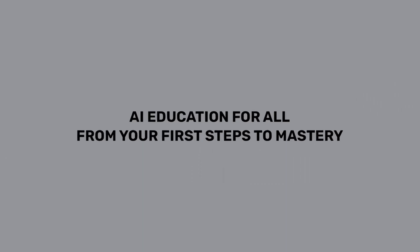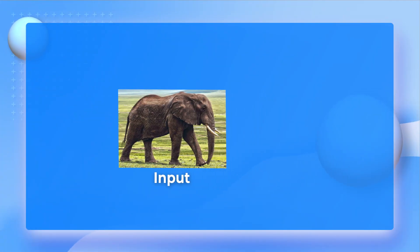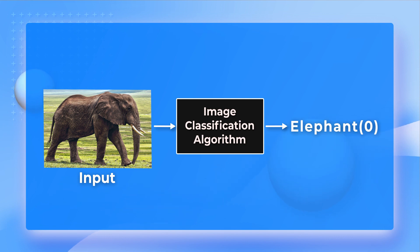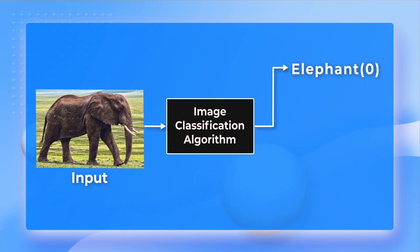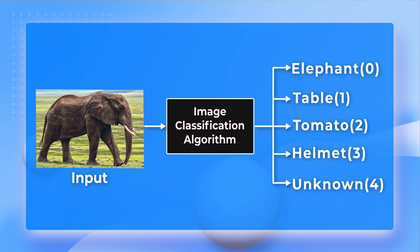What is one-hot encoding and why do we use it? Imagine you want to solve an image classification problem where the input is an image. You want your algorithm to output a single label or category that best describes the input image. You are training it to output one of the following five categories: Elephant, Table, Tomato, Helmet, and Unknown.